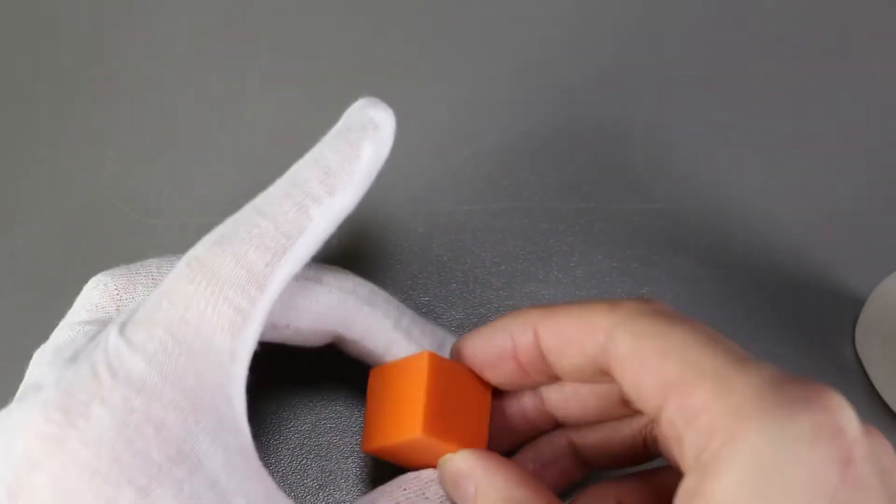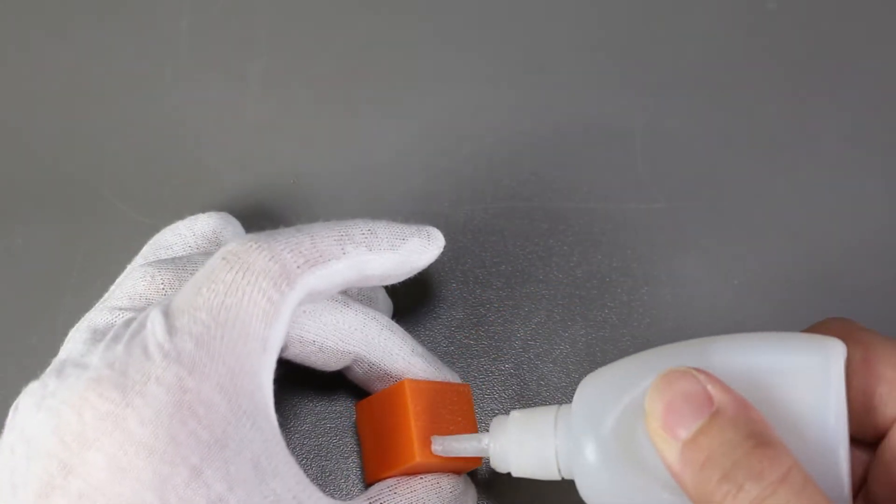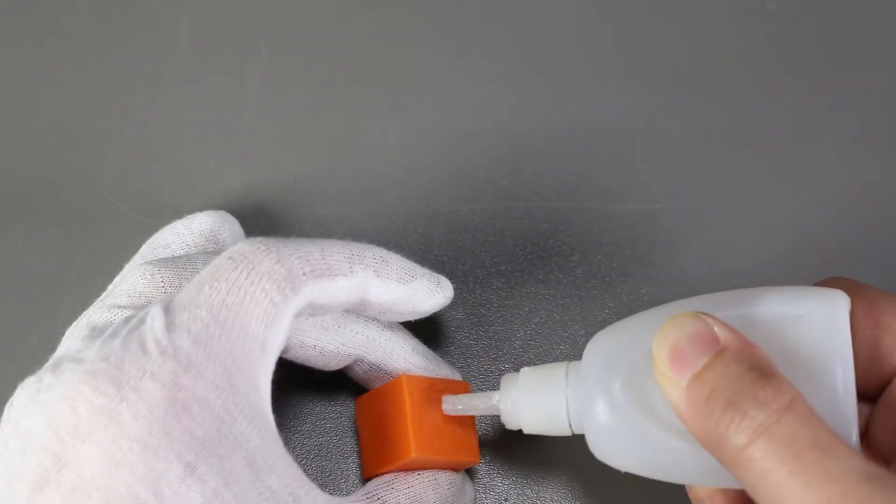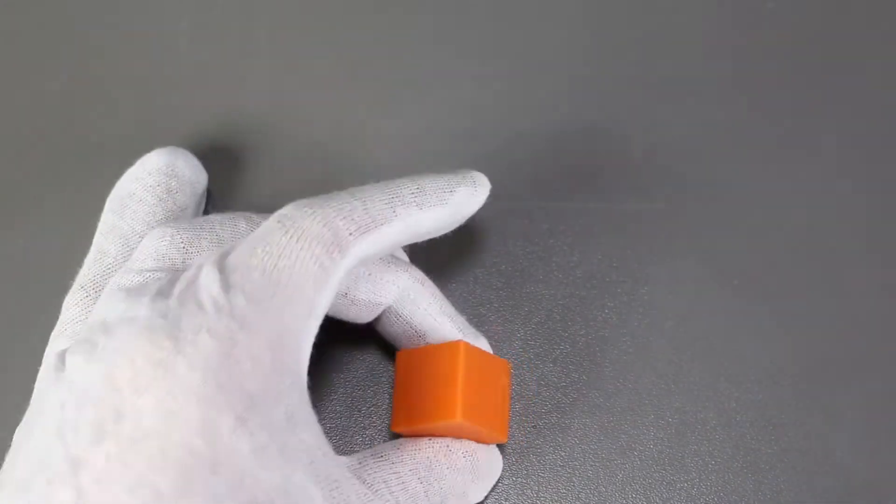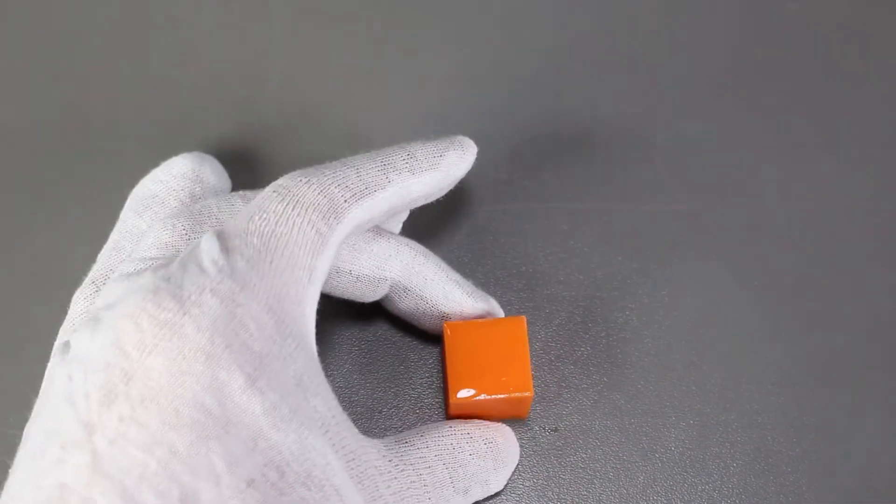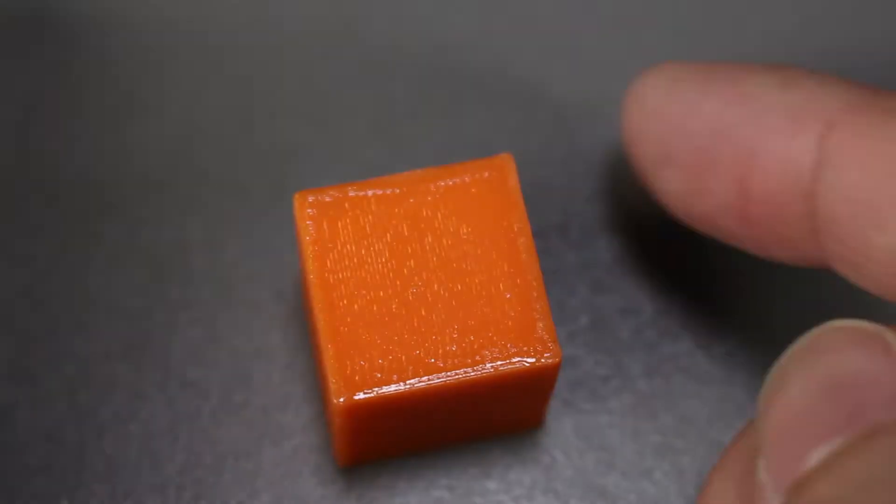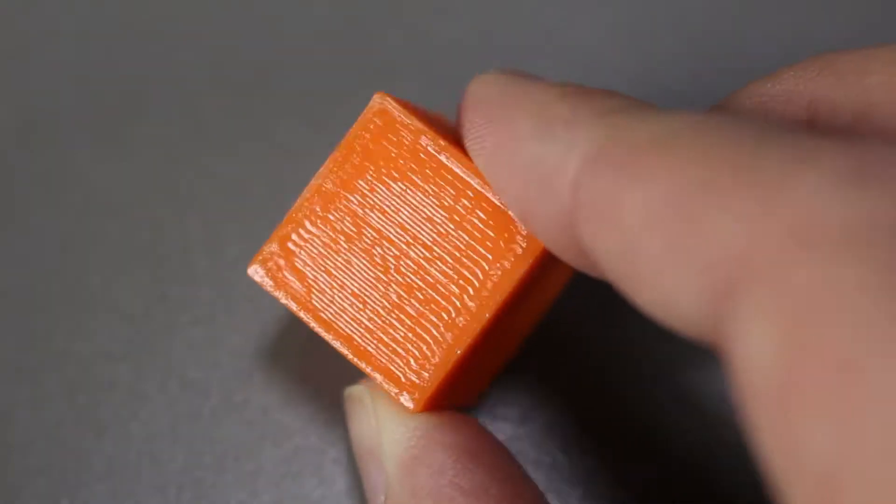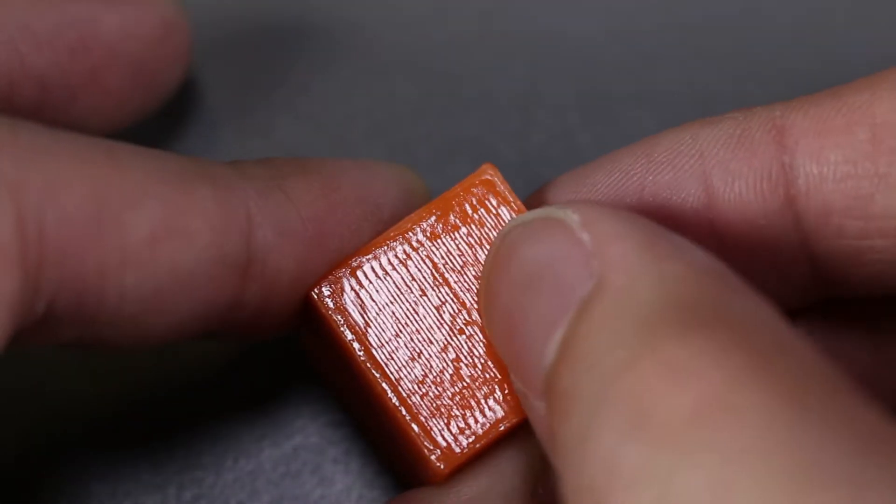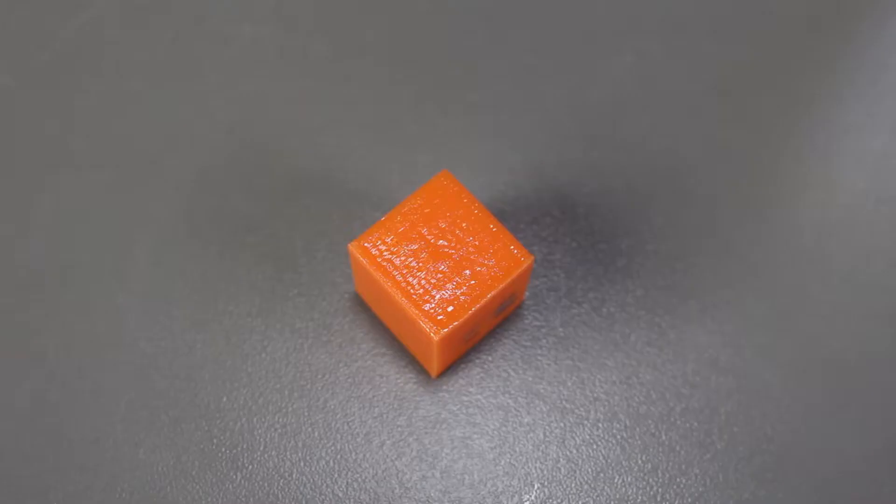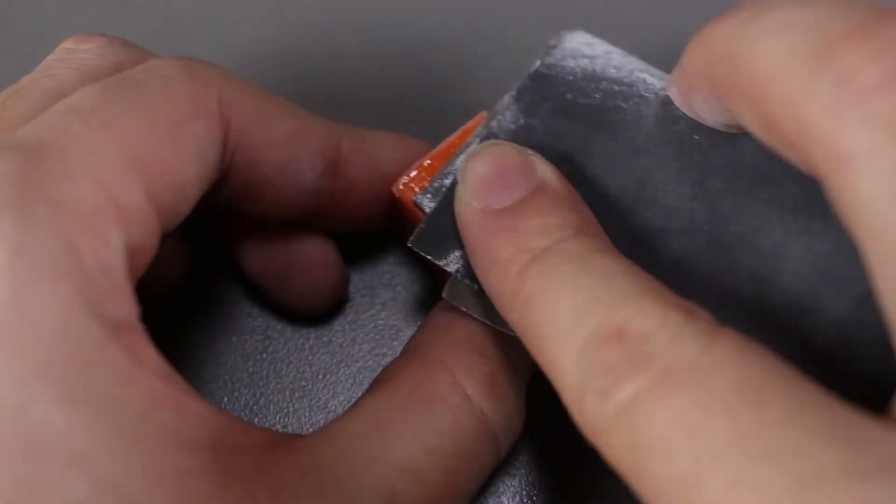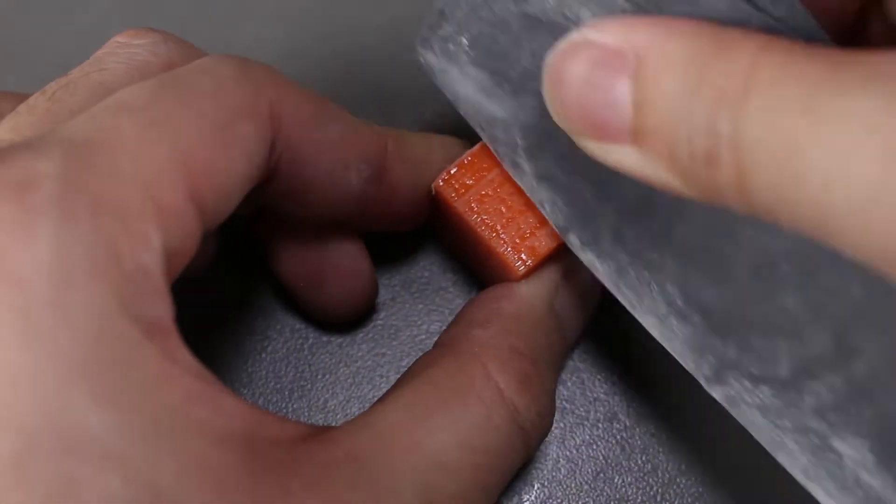I would do it to two sides of the cube. One thing good about superglue is it dries really fast, so we can actually post-process it right away. I'll sand one side down and then we can compare the two sides afterwards.